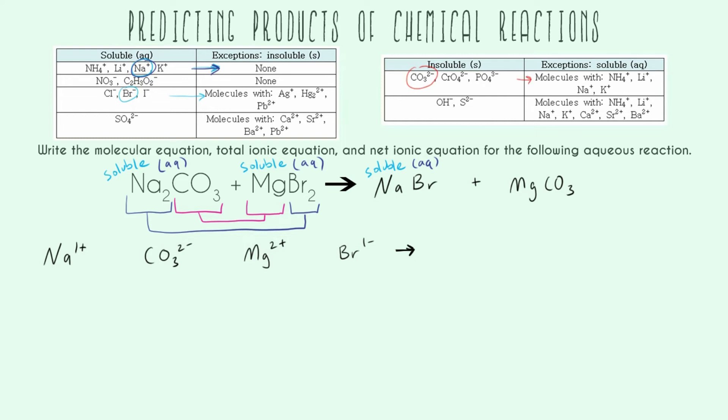And we don't see any exception. Magnesium is not there, which means this is going to be insoluble. So instead of saying AQ, we give it a little S for solid, insoluble. And so this means that a reaction does happen. We are putting in two things that completely dissolve, and then we're going to get a precipitate. We're going to get an insoluble chunk of magnesium carbonate in our reaction.